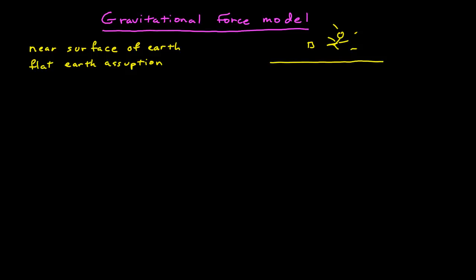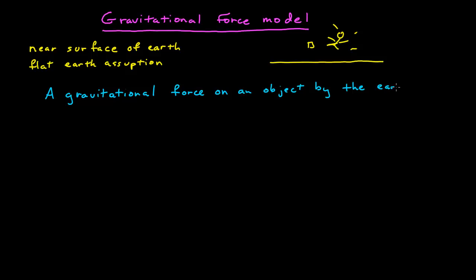So let's look at the gravitational force model. We say that there is a gravitational force on an object by the Earth. This is the type of force — gravitational — it's on an object and it's by the Earth. In this case, the agent is the Earth. So that's the statement of our force.